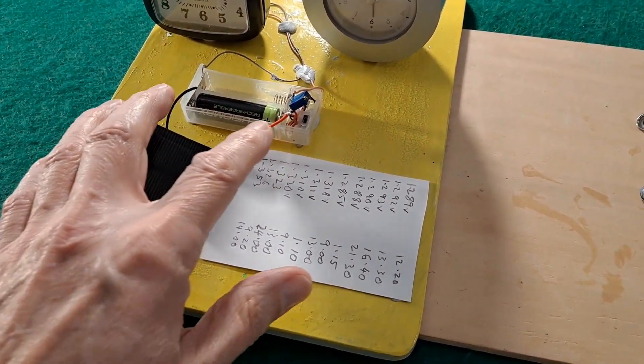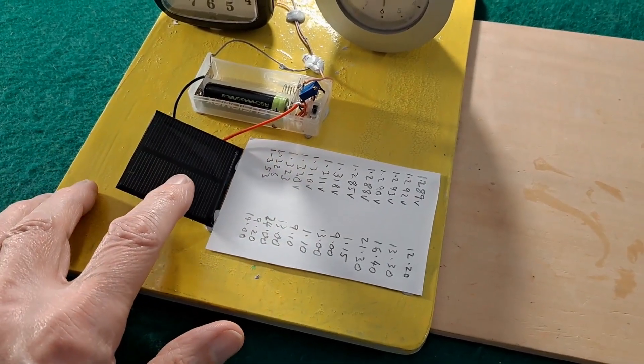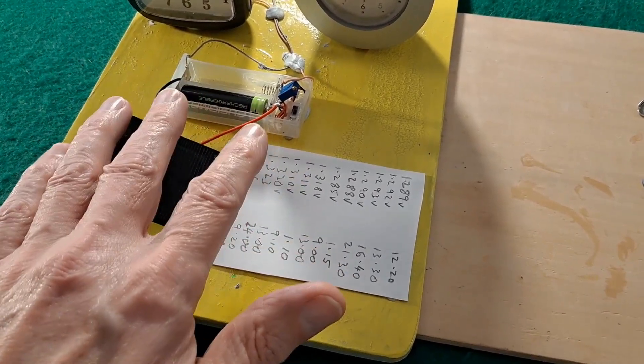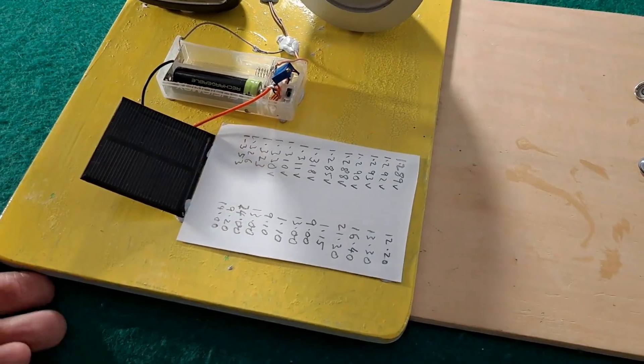And what I wanted to do was charge up a battery using the solar panel and then run the clock off the battery. Now, because I wanted to be able to work on things, I got the battery out here in a separate container.